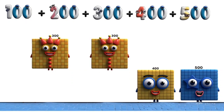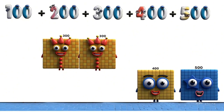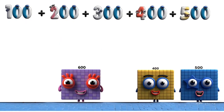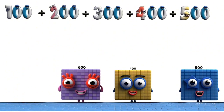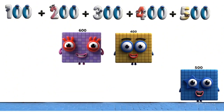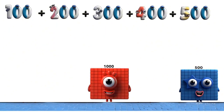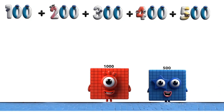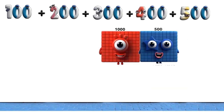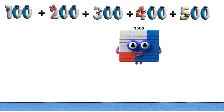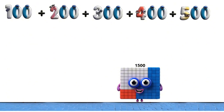300. 300 plus 300 equals 600. 600 plus 400 equals 1,000. 100 plus 500 equals 1,500.